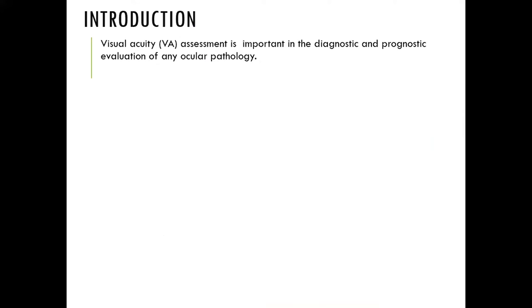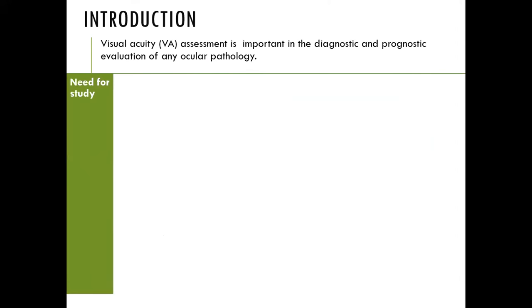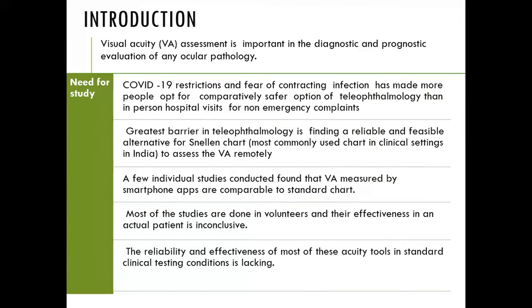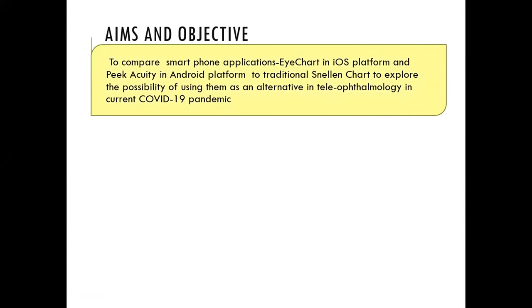Visual acuity assessment is important in diagnostic and prognostic evaluation of any ocular pathology. What is the need of our study? COVID-19 restrictions and fear of contracting infection have made more people prefer the comparatively safer option of teleophthalmology. Hence the need for finding a reliable and feasible alternative for Snellen's chart, which is the most commonly used visual acuity chart in clinical settings in India. Few individual studies found that visual acuity measured by smartphone apps is comparable to the standard chart, but most of these studies are done in volunteers and their effectiveness in an actual patient is inconclusive.